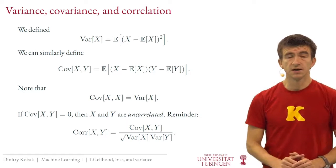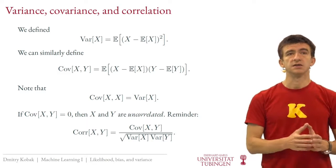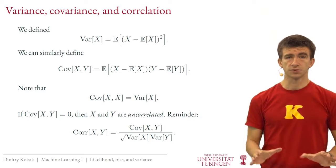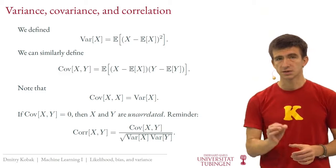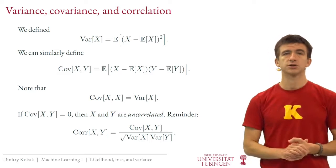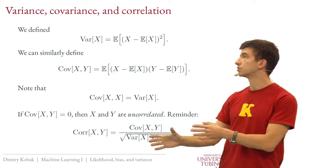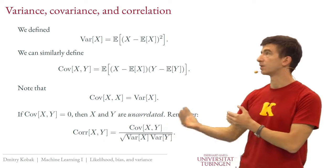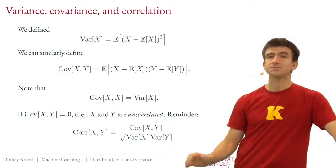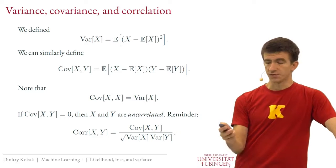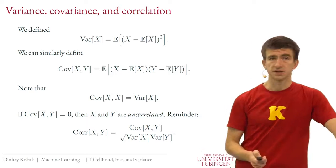If x and y are uncorrelated, the covariance is zero. Correlation is scaled covariance — we scale covariance by the square roots of the respective variances. One can show that the correlation always lies between minus one and one. Covariance can take any value, but zero covariance means zero correlation and vice versa.